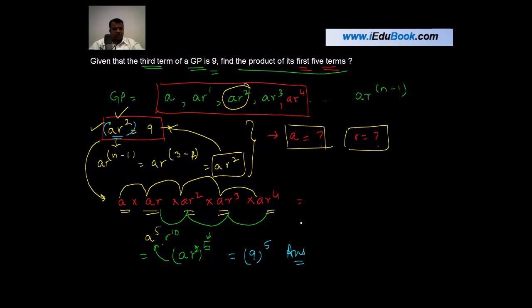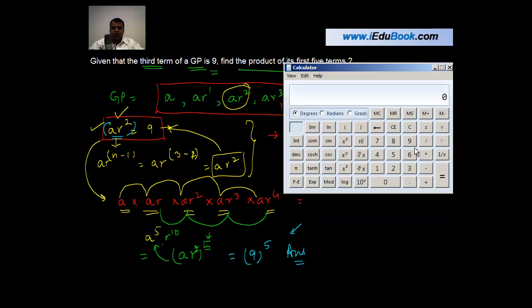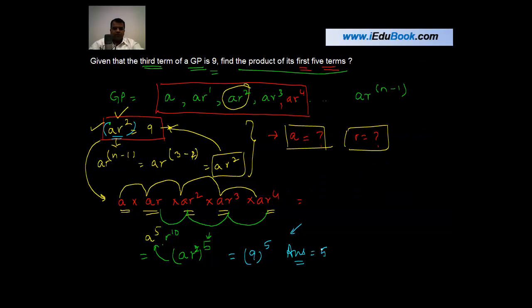If you want, you can just solve it on your calculator also, mathematically. Let's do that. So we need to find out 9 raised to the power 5, which is equal to 59,049. So the product of the first five terms of a GP whose third term is 9 is 59,049.